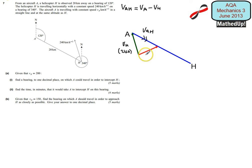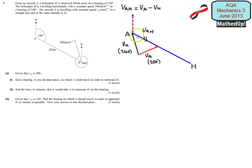This is the velocity of A relative to H, and this here is going to be my velocity of A, which is 200 kilometres per hour. I now know this velocity and this velocity. I've got a north line here, and I'll put a north line in here as well, and we want to try and work out some of our angles.